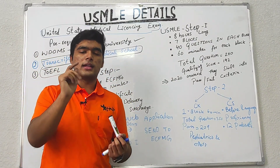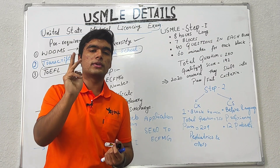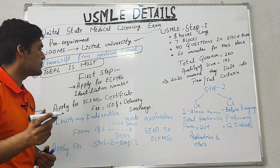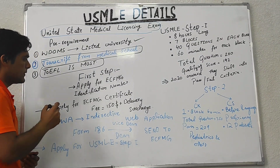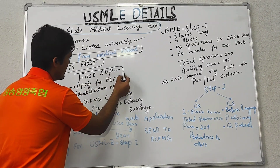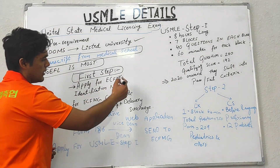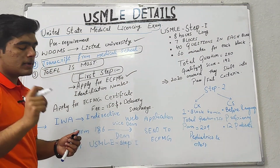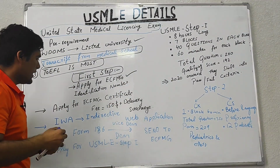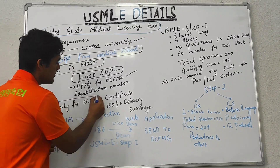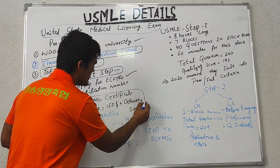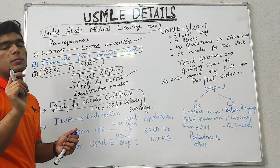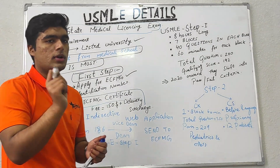You can apply in your third, fourth, or fifth year of medical school. The first step to apply is to apply for an ECFMG identification number, and then after getting the identification number, apply for the ECFMG certificate. You have to pay some dollars for it.